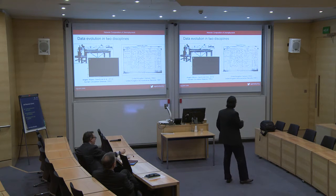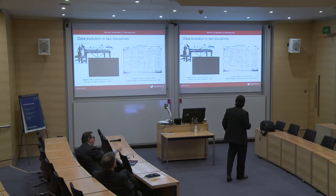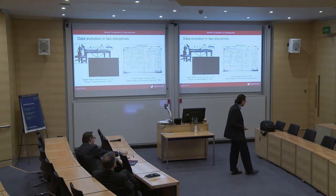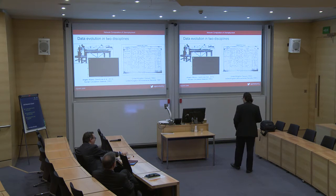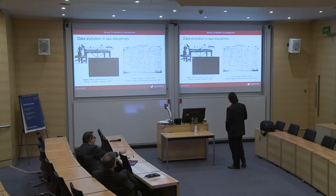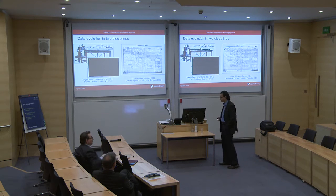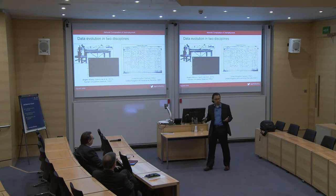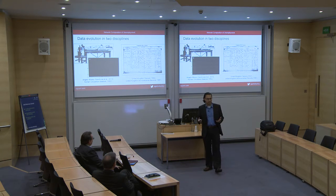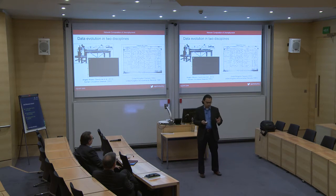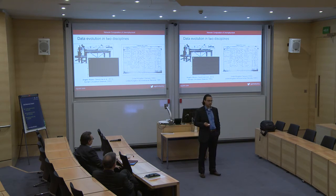It wasn't until they started looking at administrative records in 1881 that the UK was actually reporting proper unemployment rates. These records came from labor unions — they would ask how many people in the union were actually working. Both views, as you can see, are very aggregate: you count a single number as a very general description of the problem.